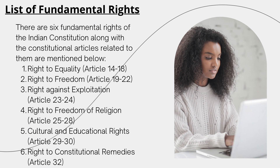Now we have a clear picture of what fundamental rights are and the different types: first is right to equality, second is right to freedom, third is right against exploitation, fourth is right to freedom of religion, fifth is right to culture and educational rights, and sixth is right to constitutional remedies.